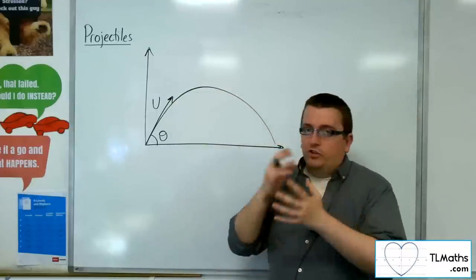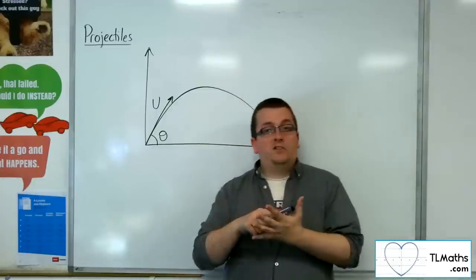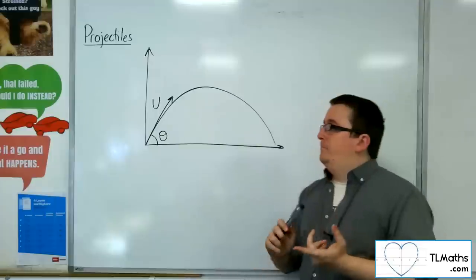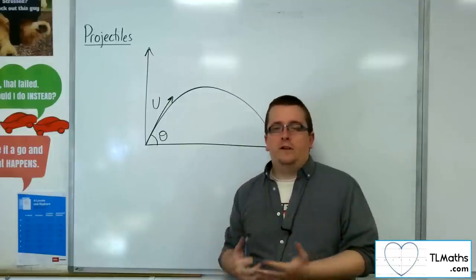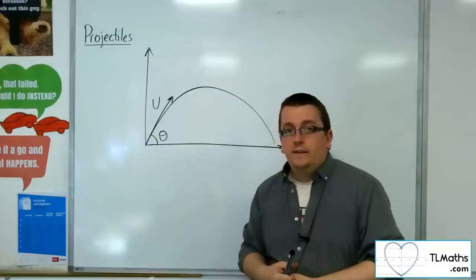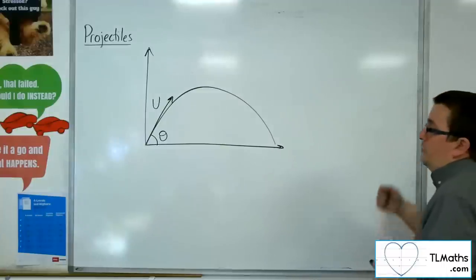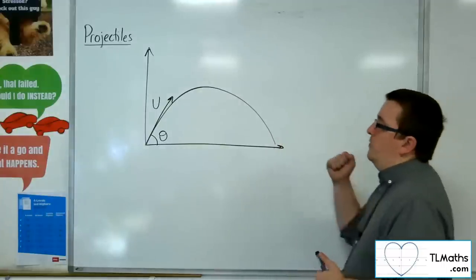So the assumptions that we're really taking into account here is that because we're modelling it as a particle, then we're not thinking about air resistance. Obviously, if we're looking at a situation where we've got like a parachutist or something like that, then air resistance would have to be taken into account. But if we're just throwing a ball through the air and we're going to model it as a particle, then we don't worry about the air resistance.